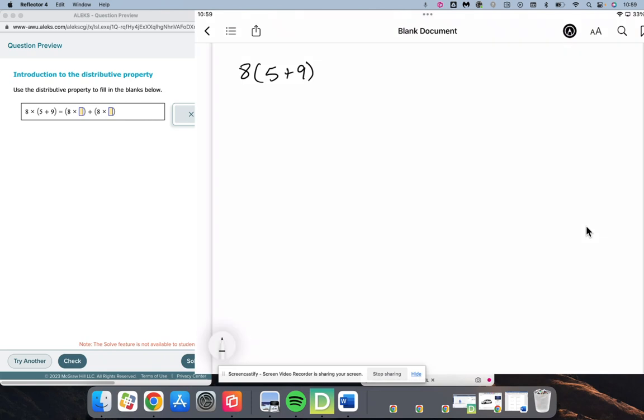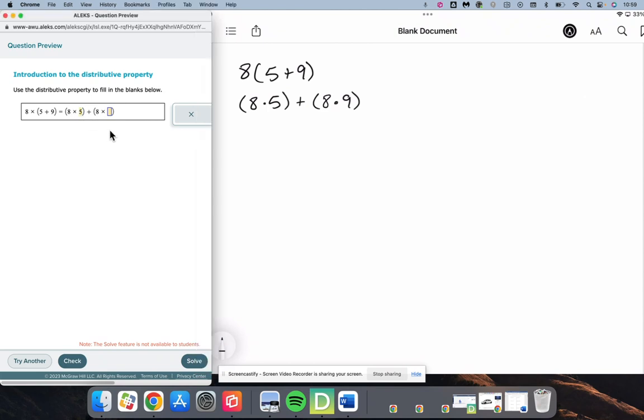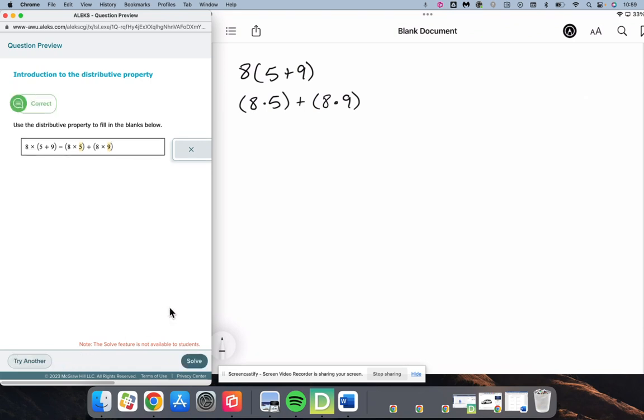So what's really going on is we're going to have 8 times 5, and then that's going to be added to 8 times 9. And so 8 times 5, 8 times 9 is what's going on with the distributive property here. We're not going to look for an answer even, we're just making sense of what the structure behind this is.